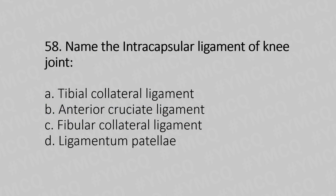Question 58: Name the intracapsular knee ligament of the knee joint — Option A: tibial collateral ligament, Option B: anterior cruciate ligament, Option C: fibular collateral ligament, Option D: ligamentum patellae. The answer is Option B, anterior cruciate ligament.